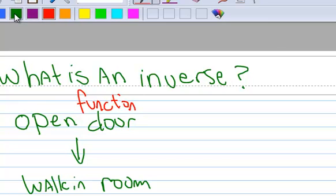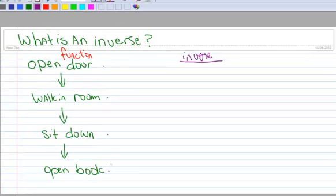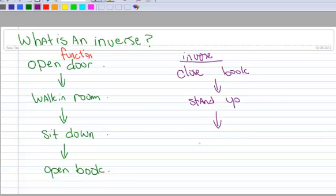All right, and then now I want to create an inverse to this. So what an inverse does is it's going to do each one of these things, but it's going to do them in opposite order. And it's going to do it reverse. So my inverse would be, the first step I would do is close the book. And then the next step I would do is stand up. And the third thing I would do would be to walk out of the room. And I suppose technically we'd walk backwards. So we're going to walk out the room. And then the very last thing I would do is close the door. So that's my inverse. This is just a basic example to give you the idea of what an inverse is.